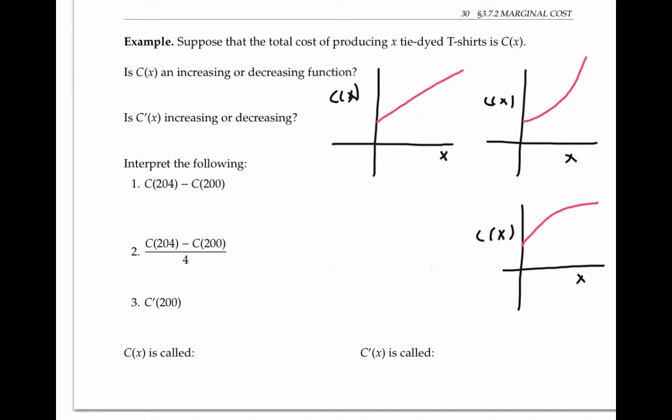But in reality, it's probably going to be cheaper to make 1000 t-shirts than it is to make just a few t-shirts. And therefore the cost per t-shirt, the slope, should be going down as x increases.